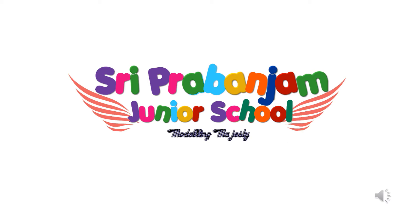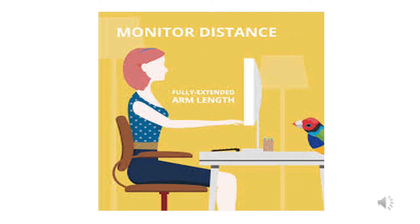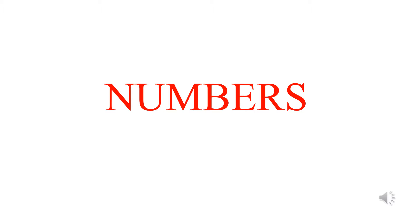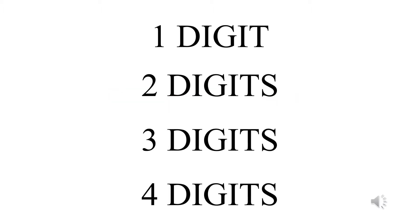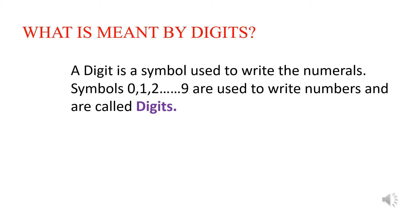Good morning students. Please maintain a distance from your mobile while watching videos. Now we discuss about numbers. You already know about numbers like one digit, two digits, three digits, four digits. What is meant by digits? A digit is a symbol used to write the numerals — numerals means numbers. The symbols are from zero to nine: 0, 1, 2, 3, 4, 5, 6, 7, 8, 9. These are used to write numbers and are called digits.